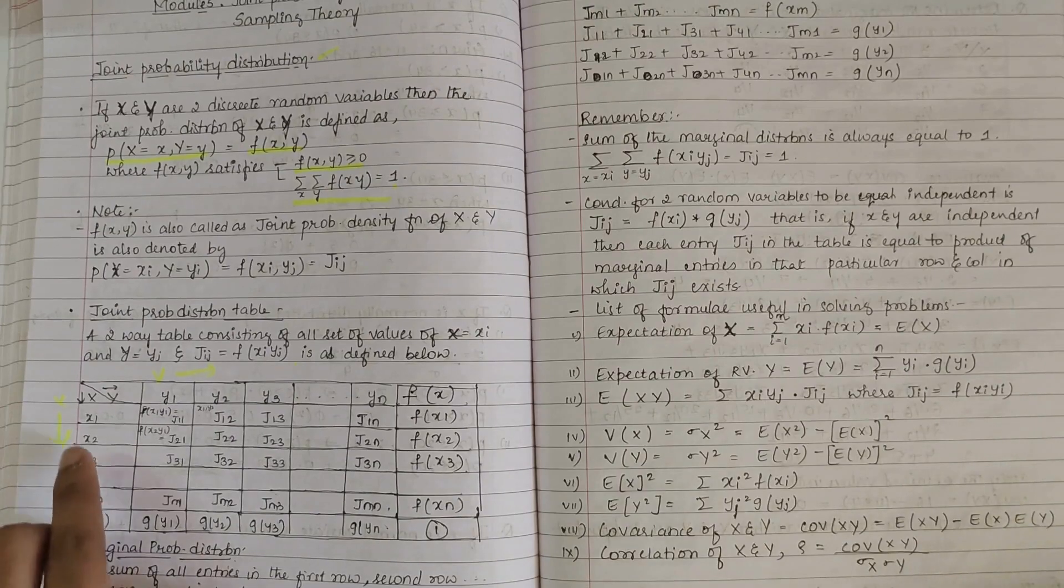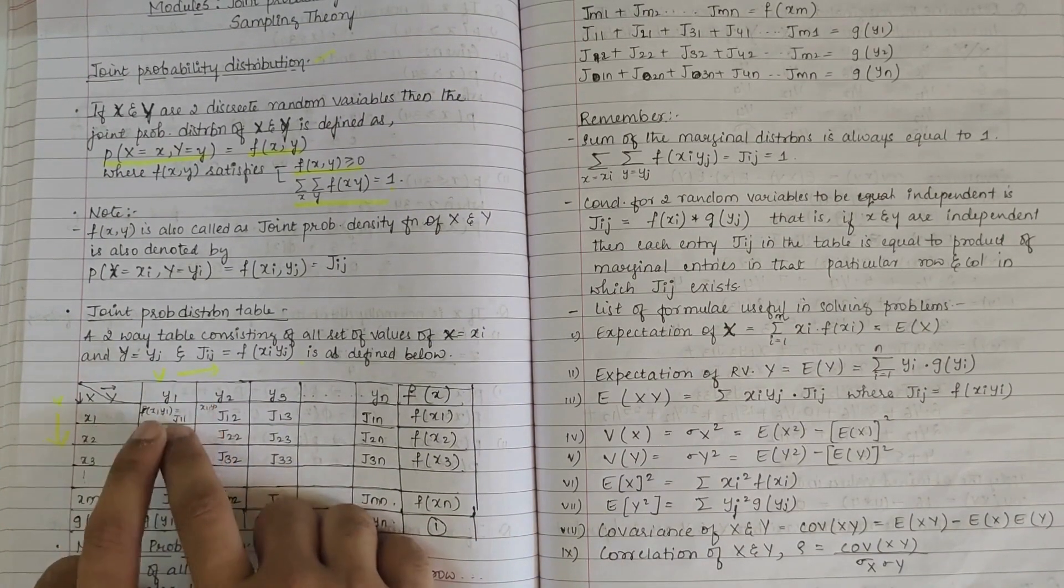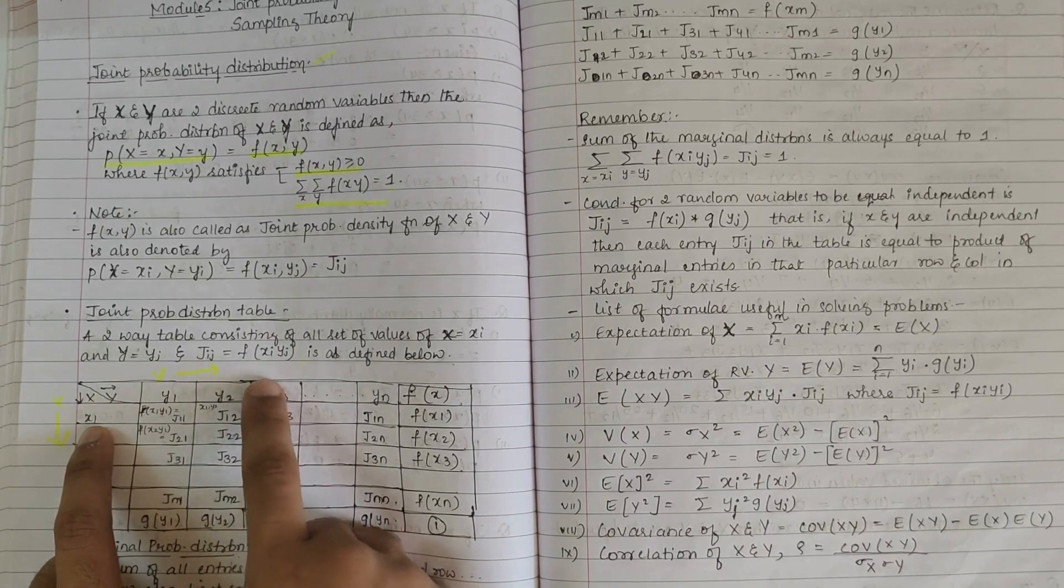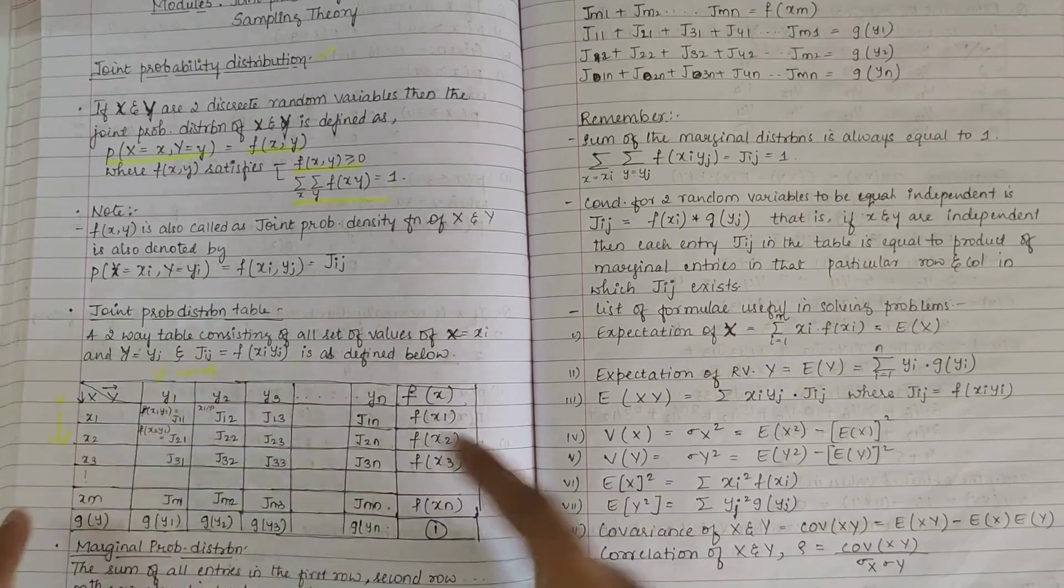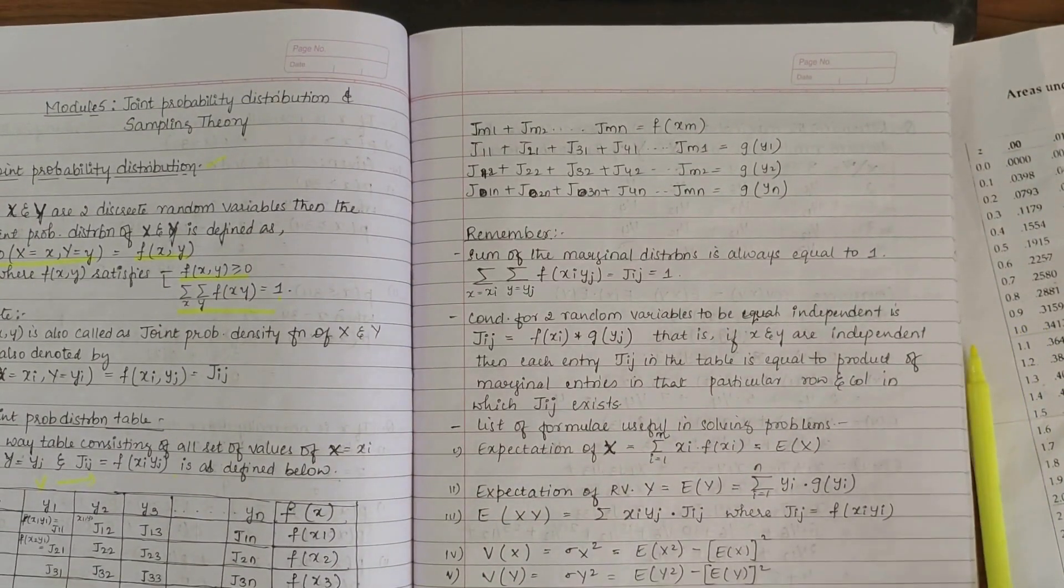X1 into Y1 gives j11, similarly. This is how joint probability and marginal probability distribution is calculated.